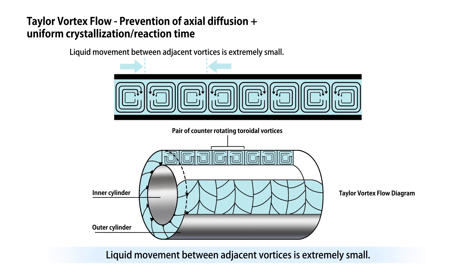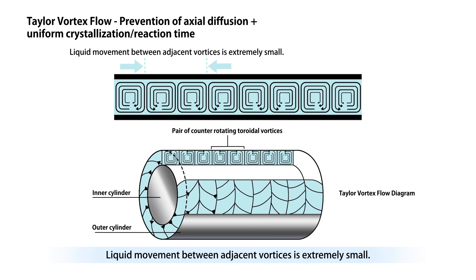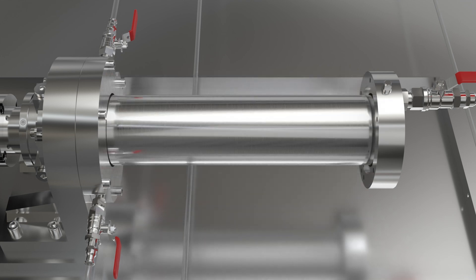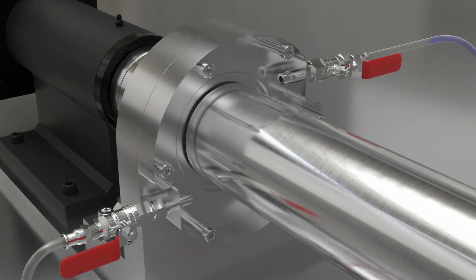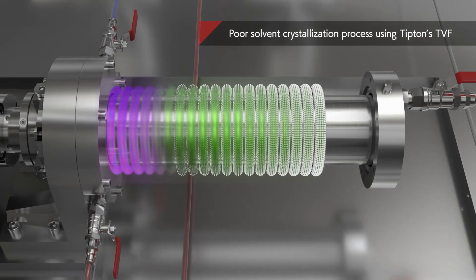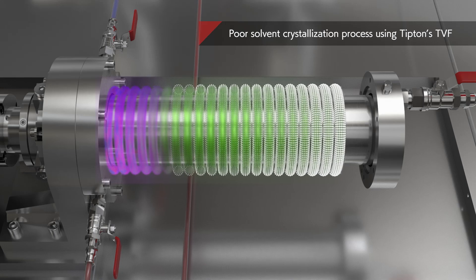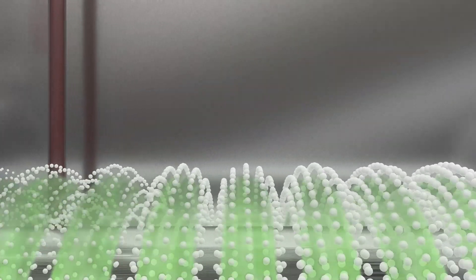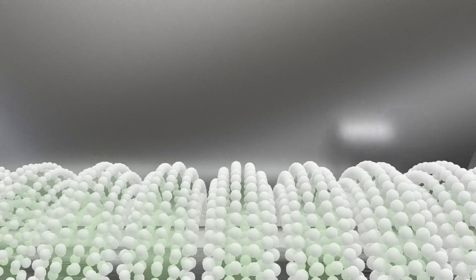This high extrudability produces innovative effects in many processes, including crystallization processes using poor solvents. When red processing liquid and blue poor solvent are introduced from the inlet, the two liquids instantly form a vortex and mix, which begins the crystallization of the API. The crystals then grow in a donut-shaped vortex and move toward the outlet, which continuously crystallizes the API.